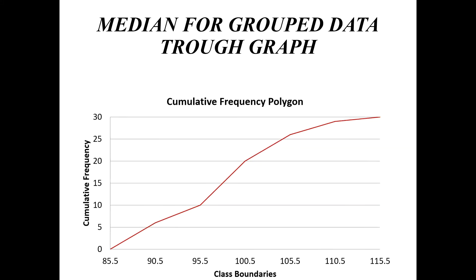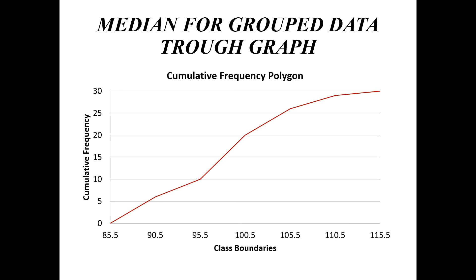Now we will learn how to find median. For that first of all you have to construct a cumulative frequency polygon. After that you have to find n by 2 value which is here 30 by 2 equal to 15.